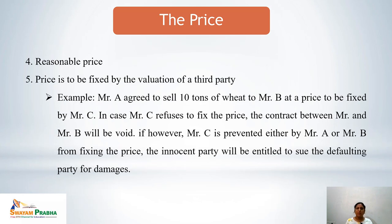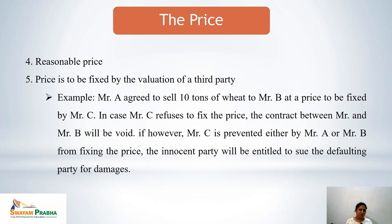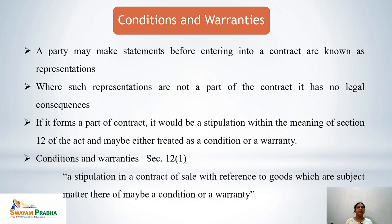Fourth, the price must be reasonable — what similar goods would fetch in the market. Fifth, price may be fixed by the valuation of a third party. For example, Mr. A agreed to sell 10 tons of wheat to Mr. B at a price to be fixed by Mr. C. If Mr. C refuses to fix the price, the contract between A and B will be void. However, if Mr. C is prevented by Mr. A or Mr. B from fixing the price, the innocent party will be entitled to sue the defaulting party for damages.